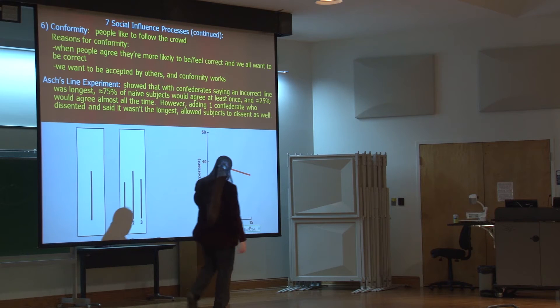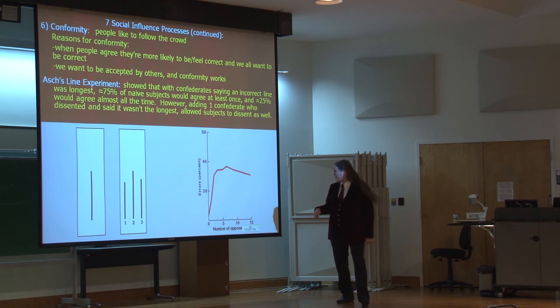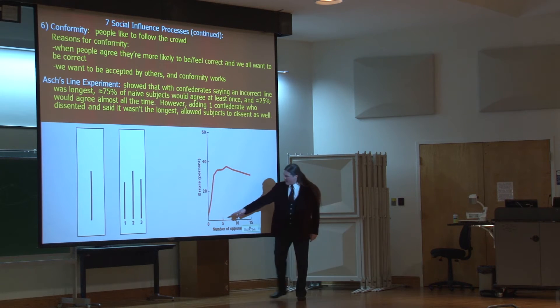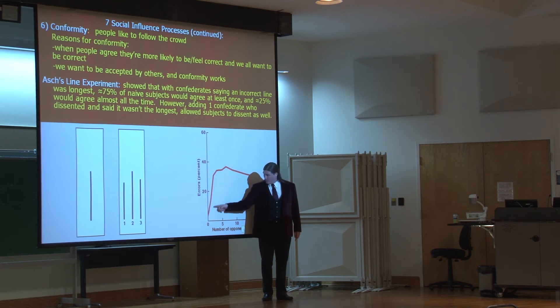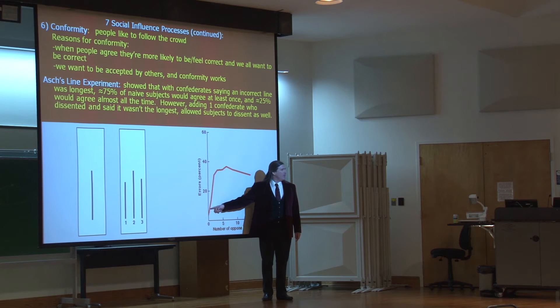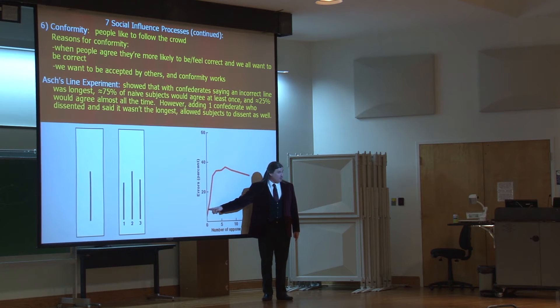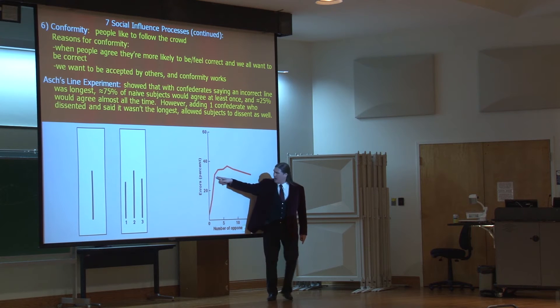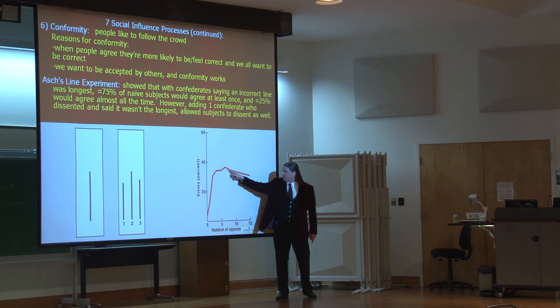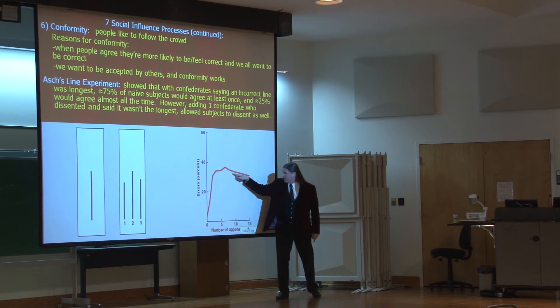The number of people opposing it, though, really did have an effect. If there was nobody there opposing it, of course they got it right every time, right? If it was just one or two other people, they would conform sometimes when it was wrong, but not as often. But the more people you had up to a point, it only took five to reach this asymptotic level.